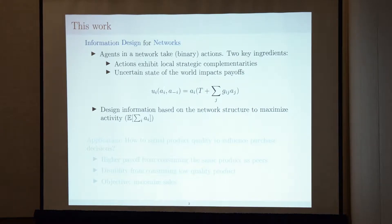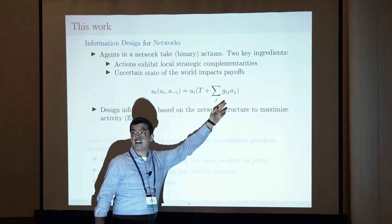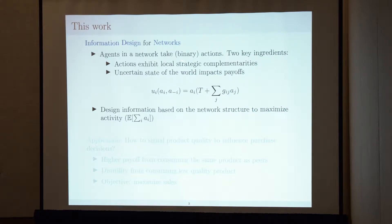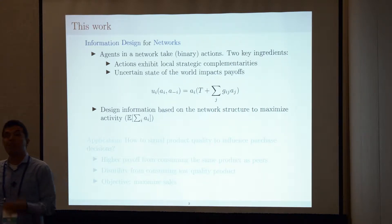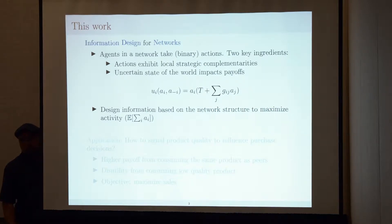I'll think about a model where agents correspond to nodes in a social network. They take binary actions, and the actions of agents exhibit local strategic complementarities. My payoff from taking action one is higher if my friends in the network also take action one. These G_ij's are entries of an underlying unweighted adjacency matrix. Payoffs are higher when I benefit from network externalities, and there is a payoff-relevant state of the world.